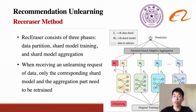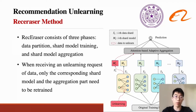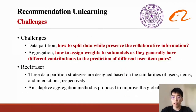The general idea of RecEraser can be abstracted into three steps. First, we divide the training data into several disjoint shards. Second, we train submodels independently. Third, we aggregate the results from all shards for final prediction. Under this framework, when receiving unlearning requests, only the corresponding shard model and the aggregation part need to be retrained, which is much more efficient than retraining from the whole data.